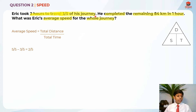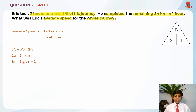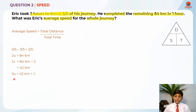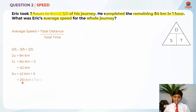We know that 2/5 of his journey was 84 kilometers. So 2 units is 84 km, meaning 1 unit is 84 ÷ 2 = 42 kilometers. So 5 units is basically the whole journey's distance — the total distance — which is 42 × 5 = 210 kilometers.